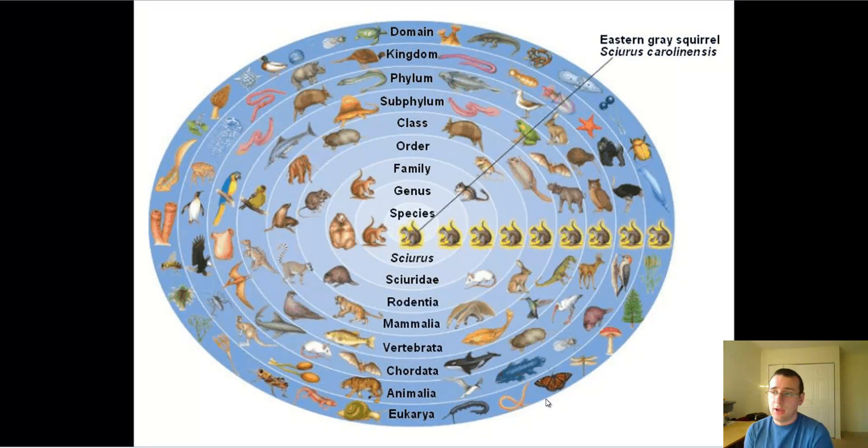You see here an example that, in a way, squirrels are worm-like, because we are all part of the kingdom animalia. So the squirrel shares its kingdom with the worm. So in a way, it's related to the worm, but obviously, it's far from the worm, because the first taxa where it's shared is the kingdom. But the squirrel is closer to something like an elephant, because it shares the class that the elephant is in. And it's even closer to a rat, because it shares the order with the rat.